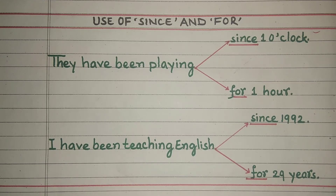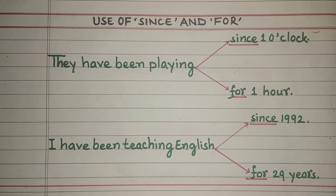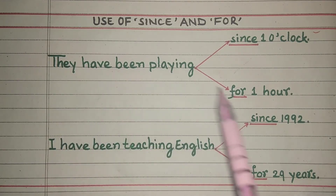If you want to say 1 hour, 2 hours, 3 hours, 4 hours, 5 hours, 6 hours, 7 hours, 8 hours, 9 hours, 10 hours, 11 hours, 12 hours — for a duration of hours — you will use 'for'. For example: They have been playing for 1 hour, for 2 hours.